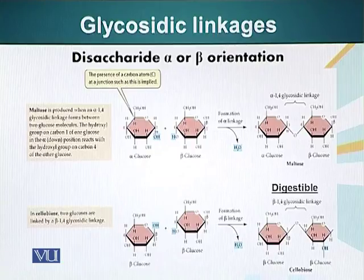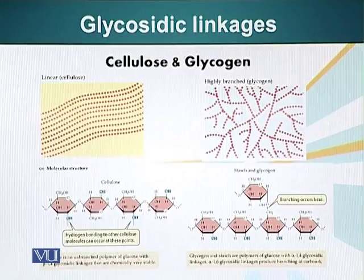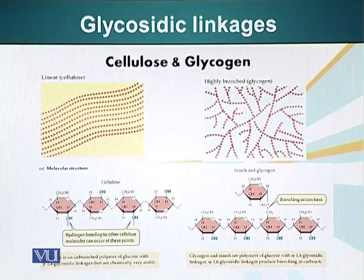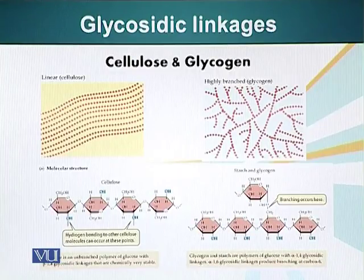Let's look at the consequences of alpha and beta bonds in the polymers. Cellulose is also a polymer of glucose molecules, but in this case the glucose molecules are linked by beta-1,4 glycosidic linkage, which is very stable and hard to break. Glycogen and starch are both similar molecules, with relatively more branching in glycogen compared to starch. These molecules have alpha-1,4 glycosidic linkages.